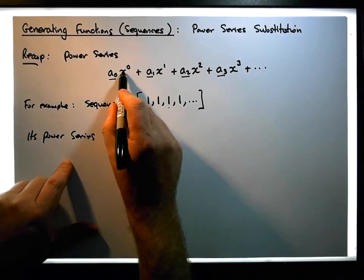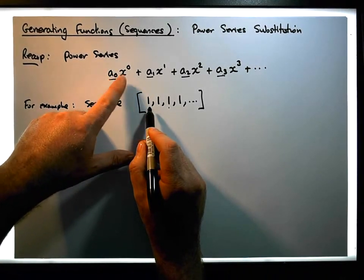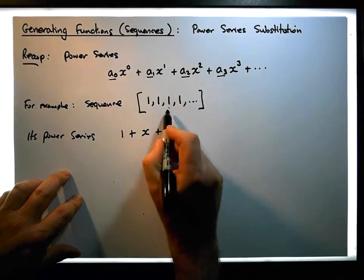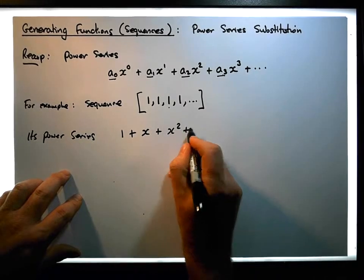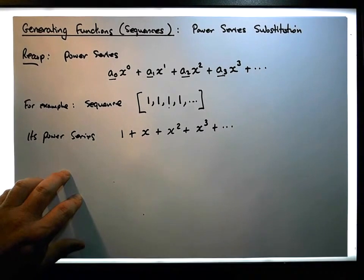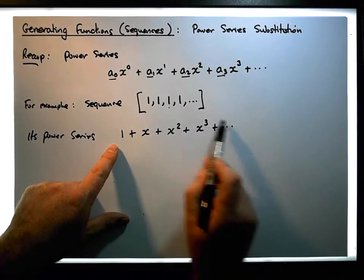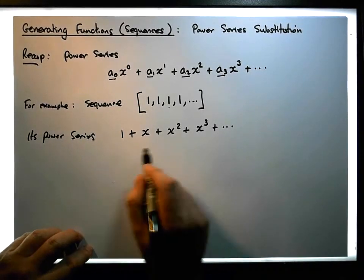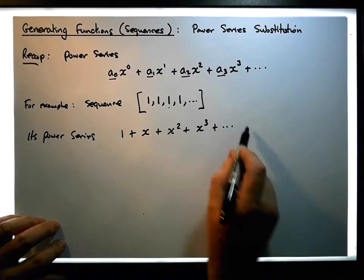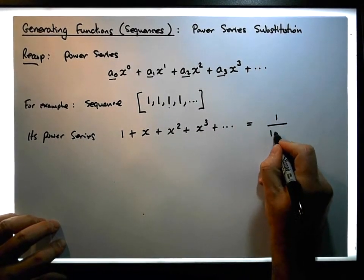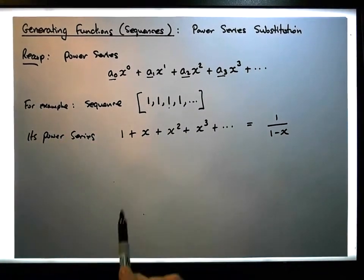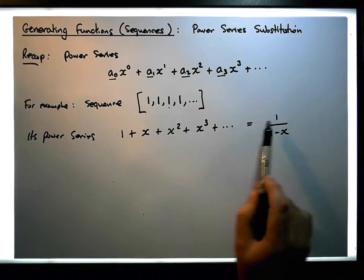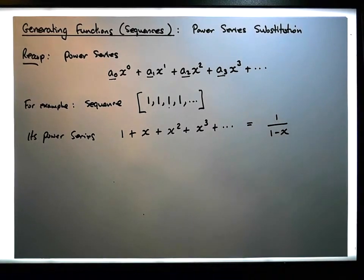It's going to be: one times x to the zero — which is just one — plus one times x to the one, which is just x, plus one times x to the two, which gives x squared, plus one times x to the three, which gives x cubed, and so on. We had a technique that allowed us to sum up this particular infinite power series, and what we found is that the function associated with this summation is simply equal to one over one minus x.